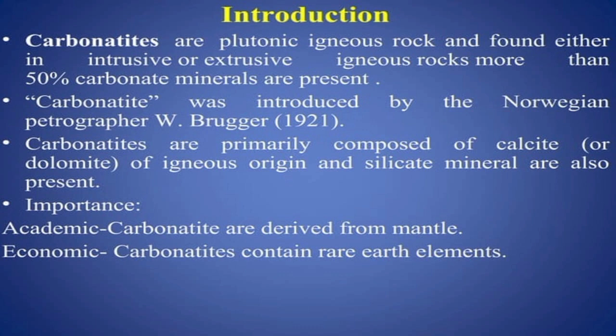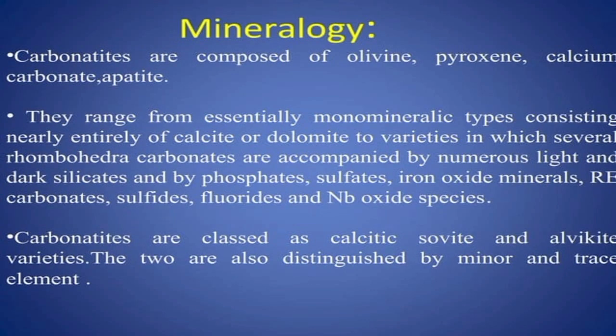An important point is that carbonatites are derived from the mantle and contain rare earth elements. Regarding mineralogy, carbonatites are composed of olivine, pyroxene, calcium carbonate, and apatite. They range from essentially monomineralic types consisting nearly entirely of calcite or dolomite to varieties in which several rhombohedral carbonates are accompanied by light and dark silicates, phosphates, sulfates, iron oxide minerals, sulfides, fluorides, and niobium oxide species. Carbonatites are classed as calcite, sovite, and beforsite varieties, distinguished also by minor and trace elements.